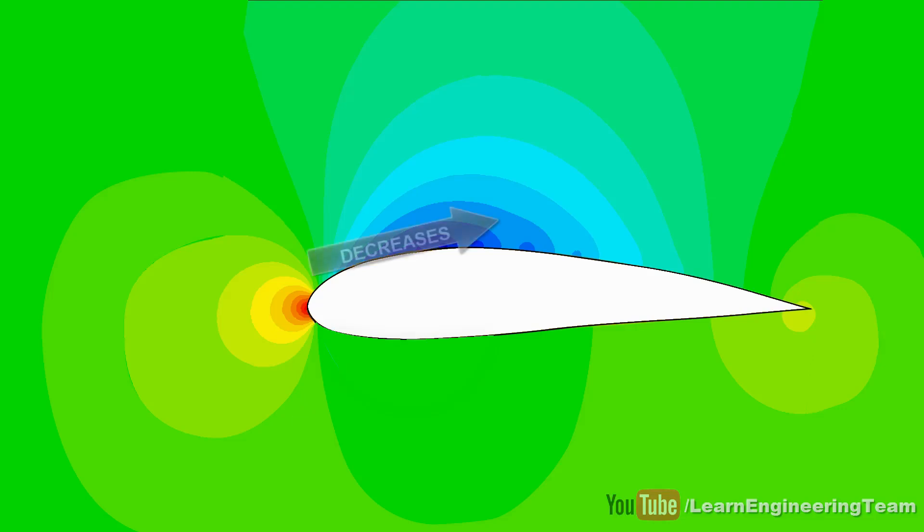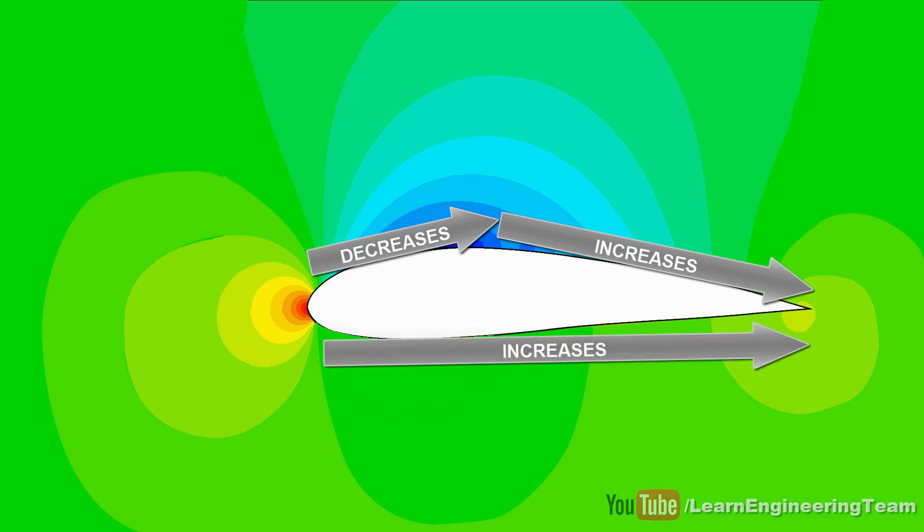You can see that at the top, the pressure decreases almost to the midpoint before it increases. At the bottom, the pressure keeps on increasing until it reaches the tail. Only after that does it decrease.